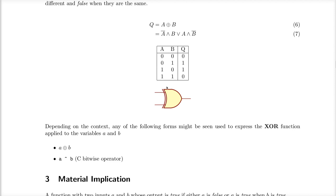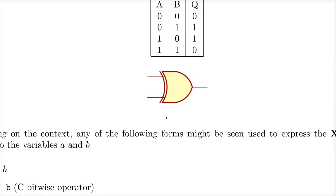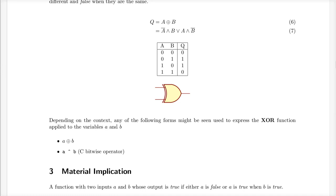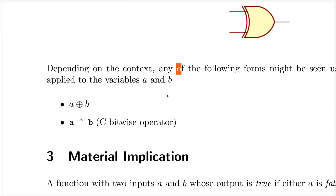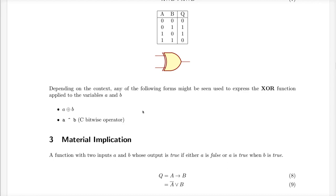In a schematic, the XOR gate looks like an OR gate with an extra curved line on the left side. The Boolean notation uses a circle with a plus sign inside. In C there is only a bitwise exclusive OR — no logical exclusive OR — and it uses the caret (^) operator, which you get by pressing Shift+6 on a US keyboard. So A ^ B is the bitwise exclusive OR in C.